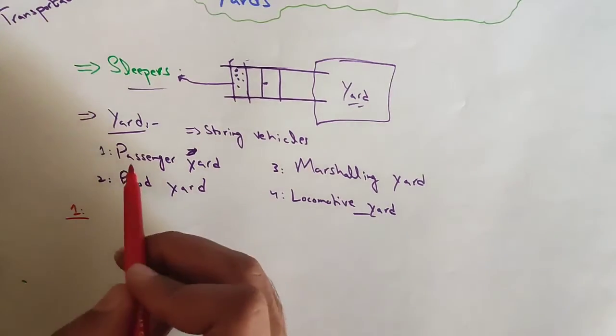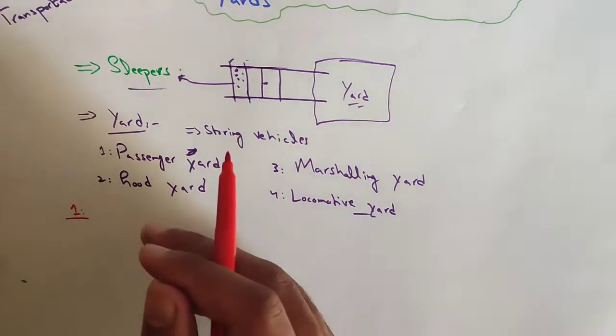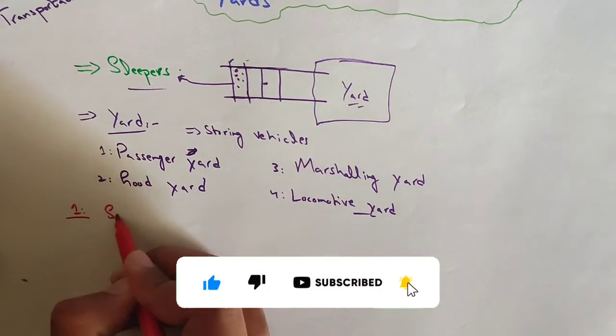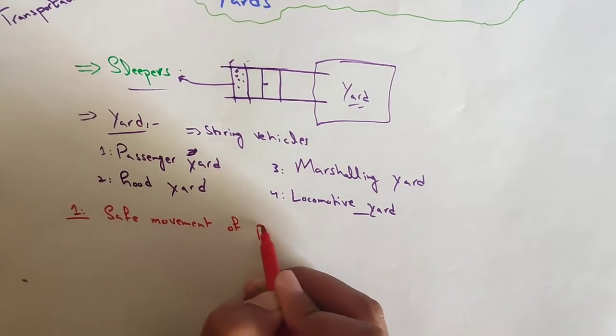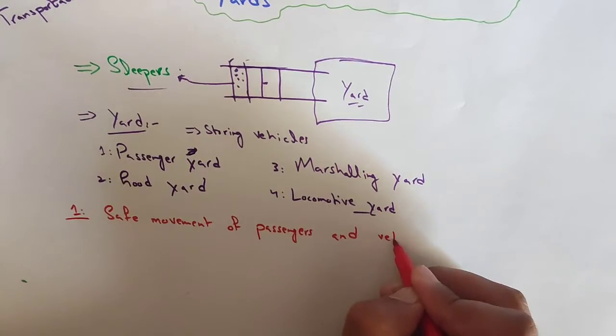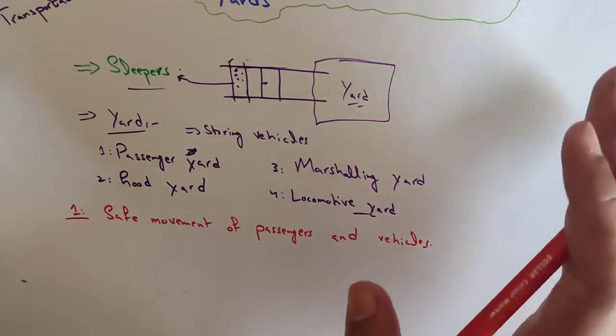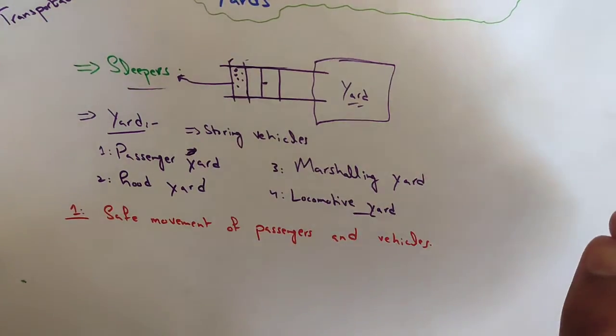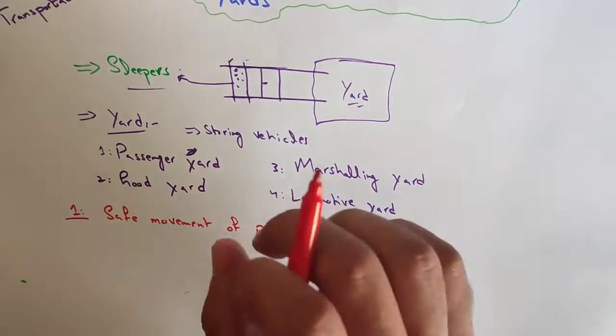The first one is passenger yard. The main function of passenger yard is to provide facilities for the safe movement of passengers and vehicles. The passenger platform may be considered as passenger yard. At junctions or terminals, separate sidings are provided to accommodate passengers and trains during their idle periods.